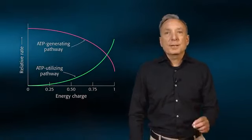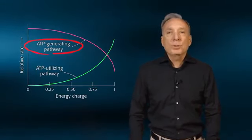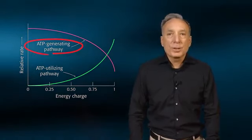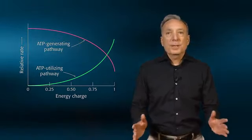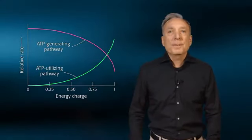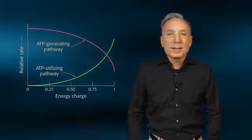The greater the exercise intensity, the greater is the rate of ATP utilization, resulting in a large drop in the energy charge in working muscles. Basically, the greater the rate of ATP utilization, the greater the activation of ATP-generating pathways, such as glycolysis.